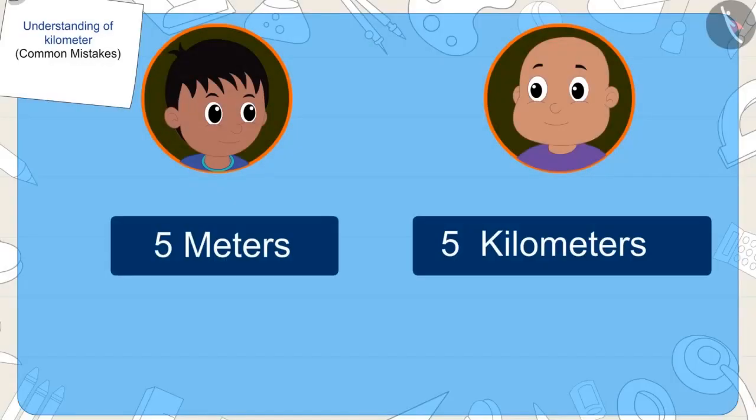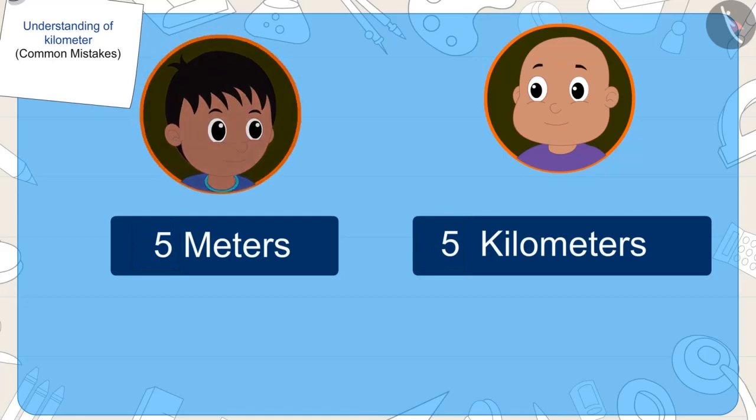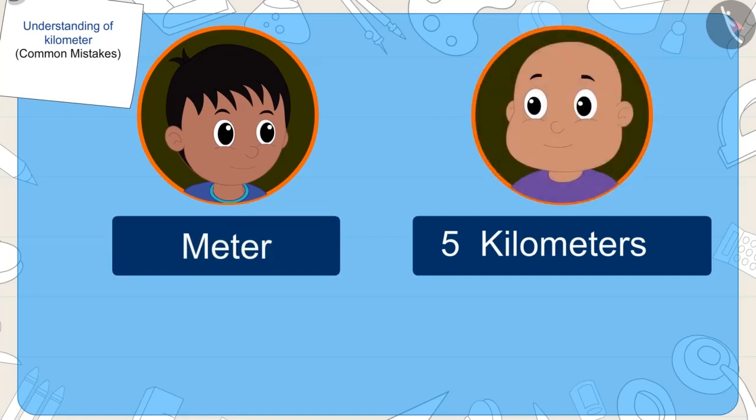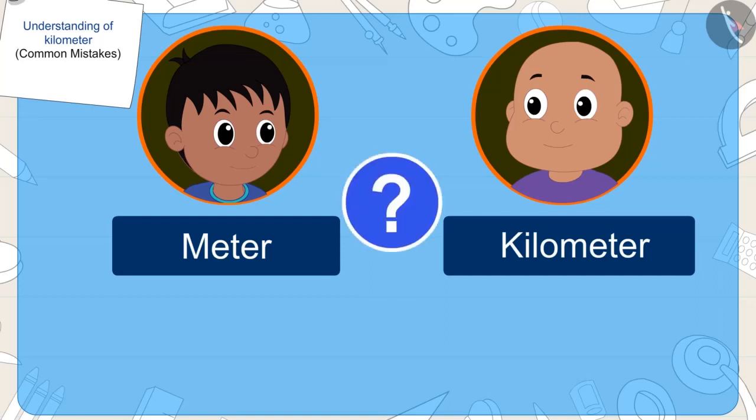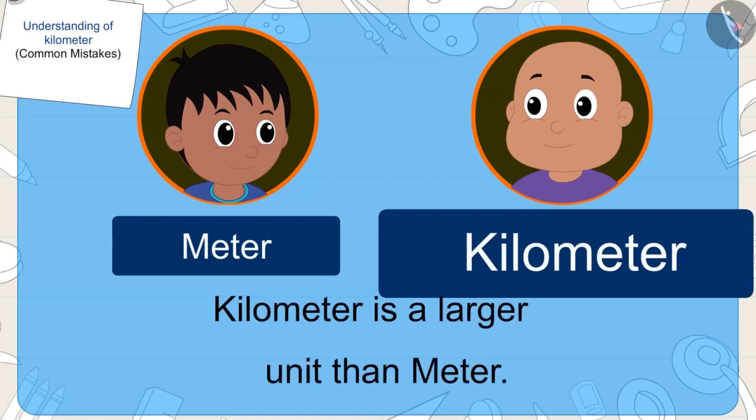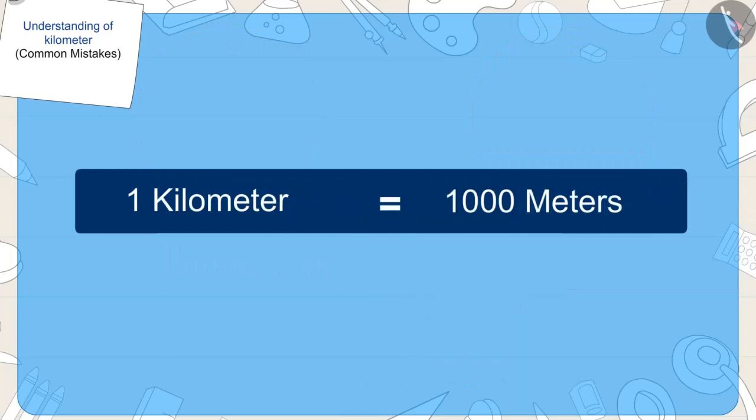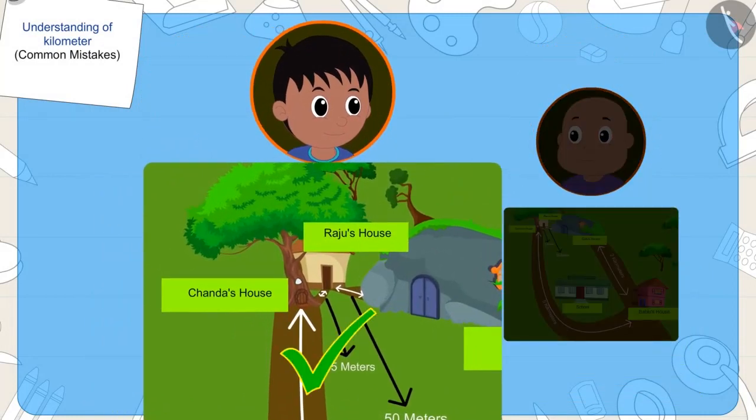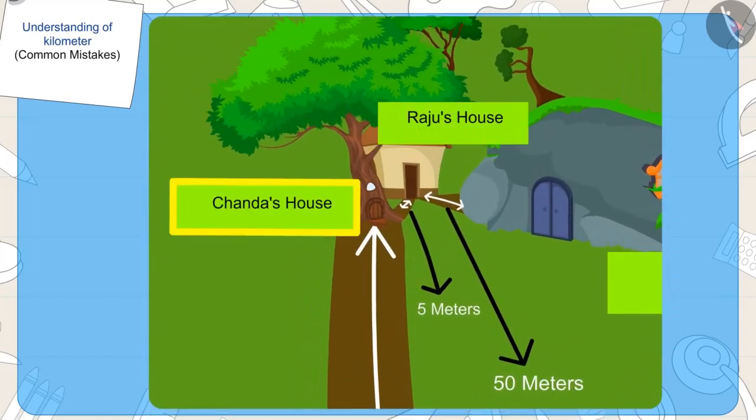Even though the distance numbers of Raju and Babalu's houses, five, are the same, the distance unit of Raju's house is in meters and the distance unit of Babalu's house is kilometers. And kids, you do know which one of these two units is bigger, don't you? Yes! Kilometer is a larger unit than meter because one kilometer is equal to one thousand meters. So, whose point is correct? Right! Raju's argument is right. His house is closer to Chanda's house.